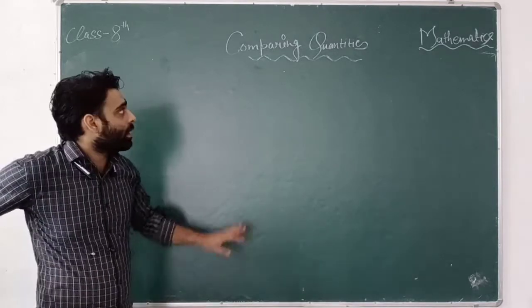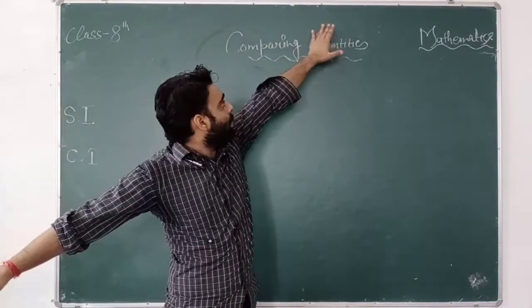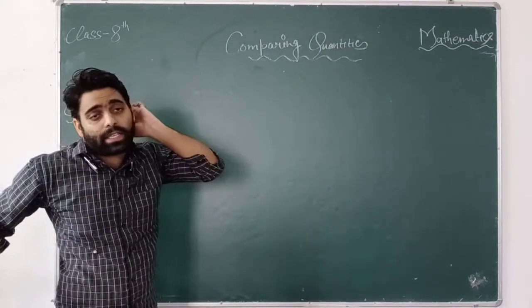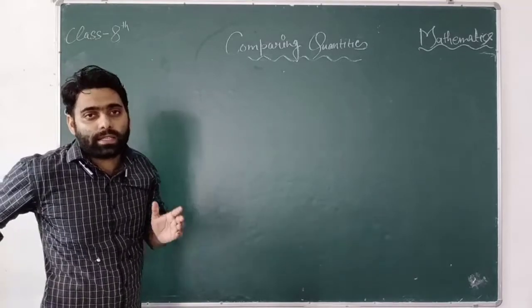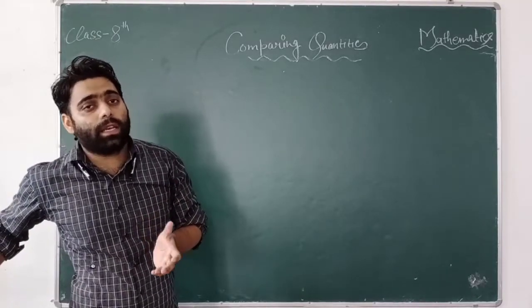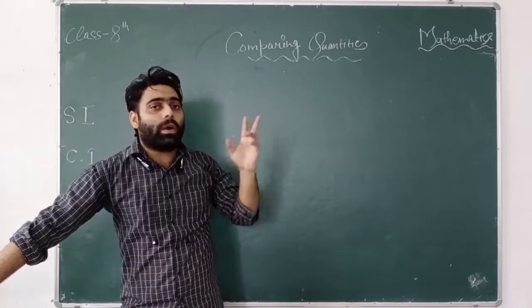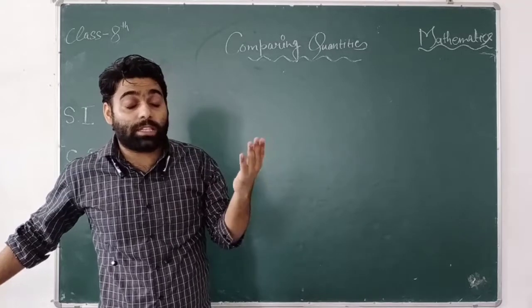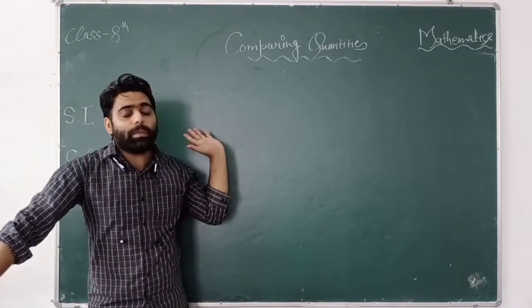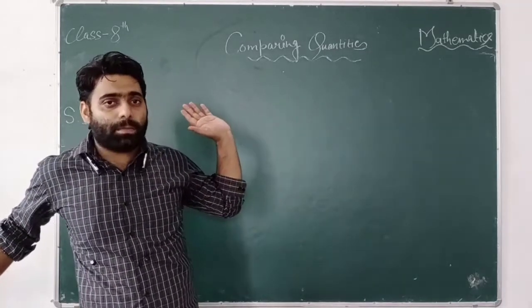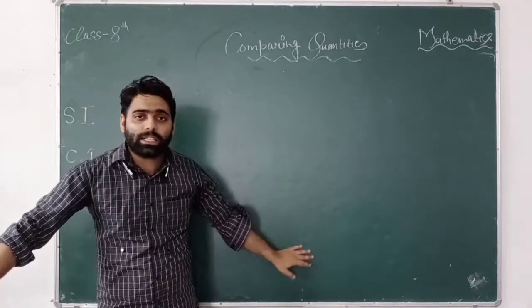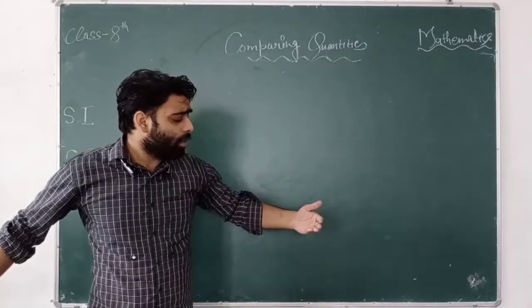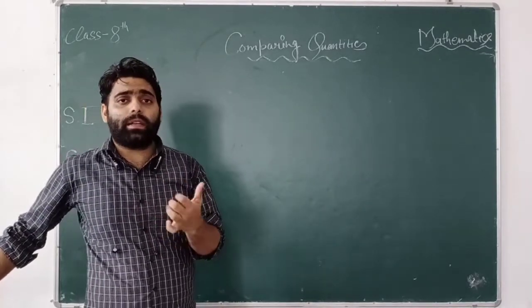We have completed our comparing quantities first part. Now in comparing quantities second part, we are going to discuss compound interest and simple interest. We are going to discuss these two types of interest in this video.